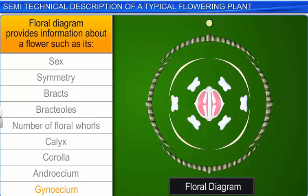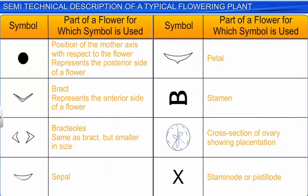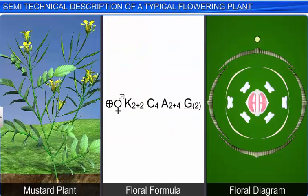Like in the floral formula, various symbols are used while drawing a floral diagram as shown. Thus, the description of a flowering plant provides vital information about the plant. The description begins with the vegetative and floral characteristics and is followed by the floral formula and the floral diagram.